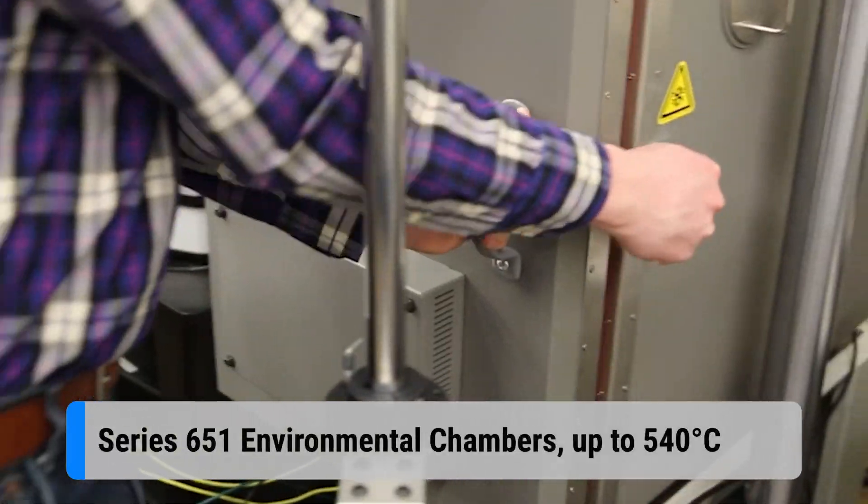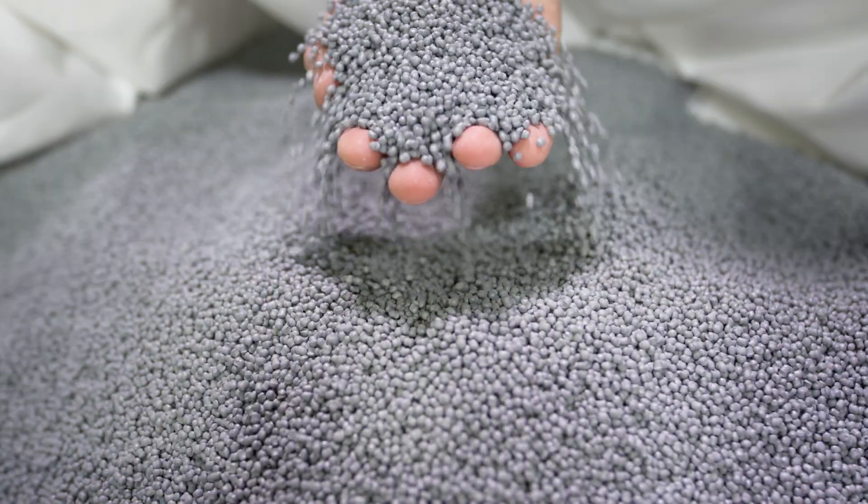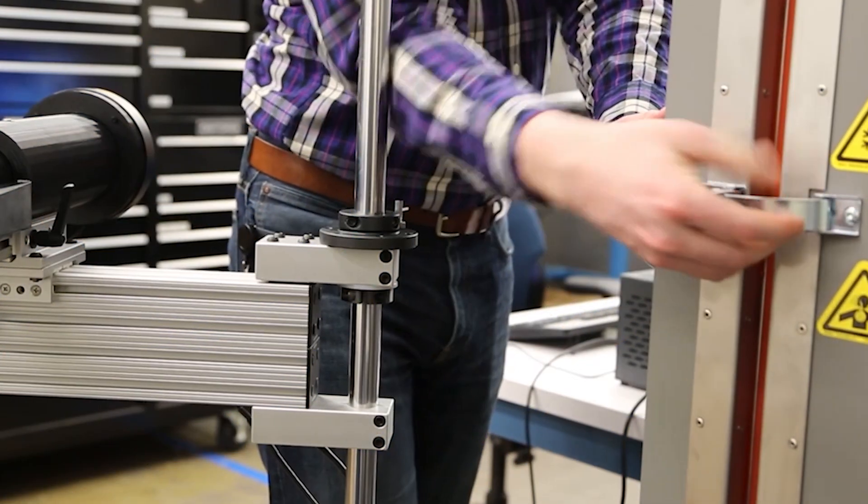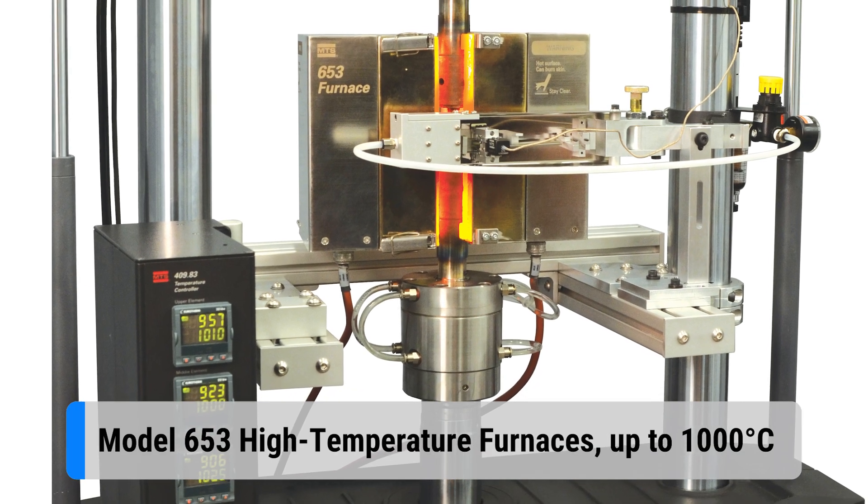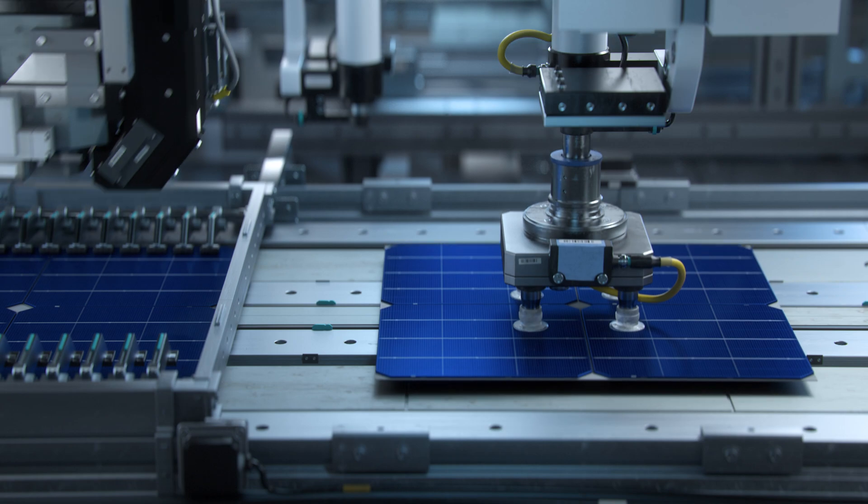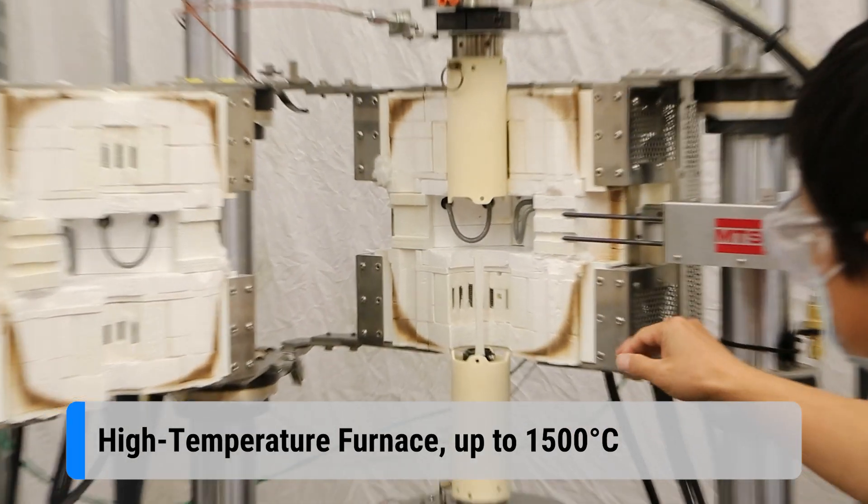Environmental chambers are typically used to test polymers, plastics, and polymer matrix composites for temperatures up to 540 degrees Celsius. Furnaces support isothermal high-temperature testing of metallic and ceramic materials up to 1500 degrees Celsius.